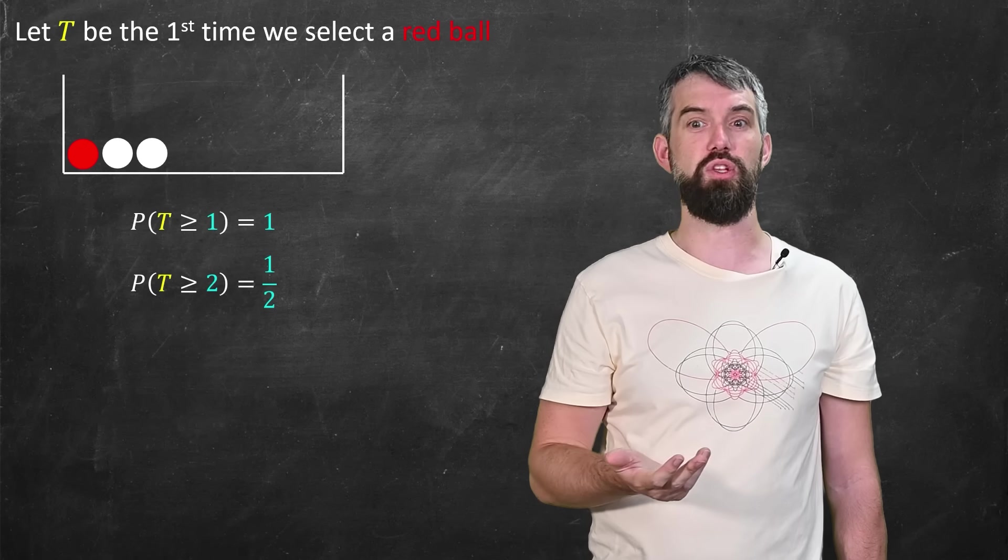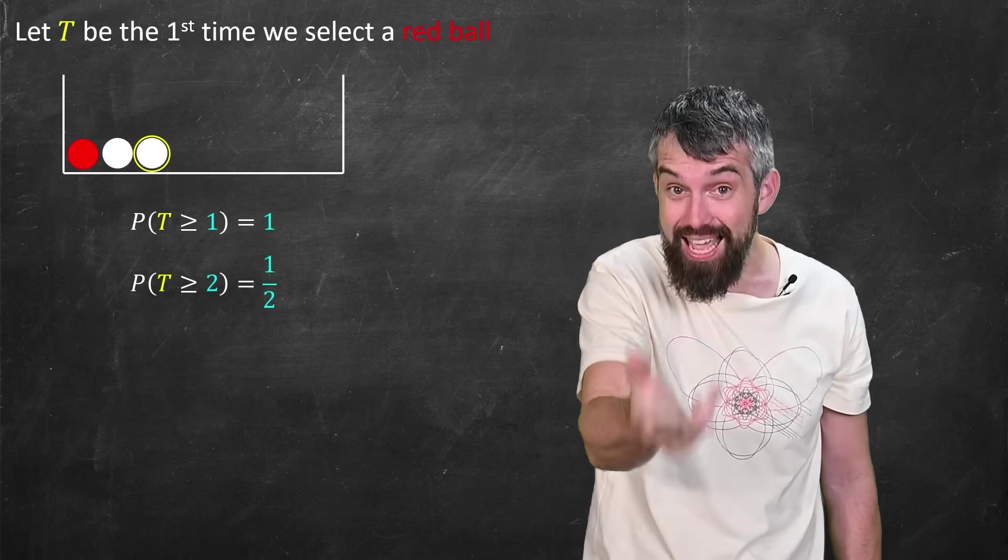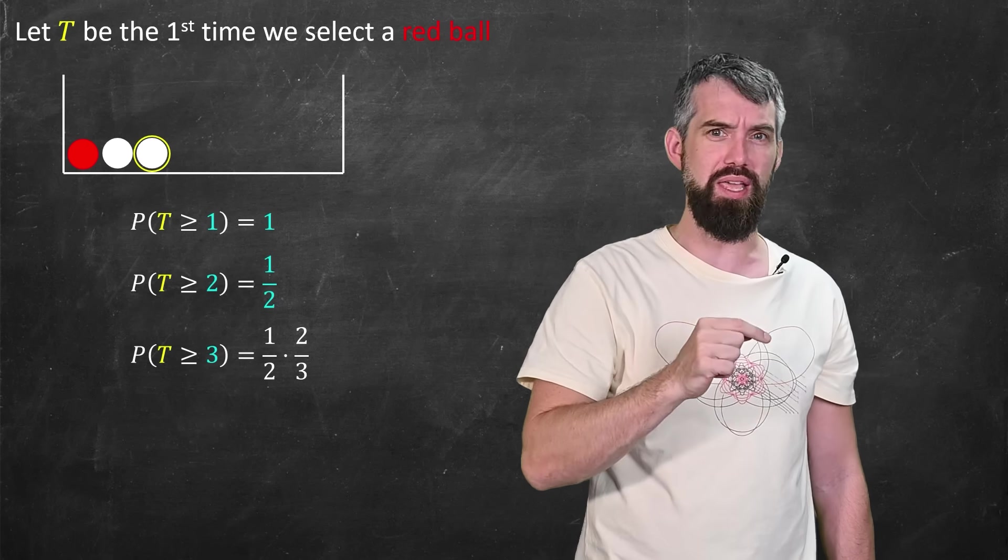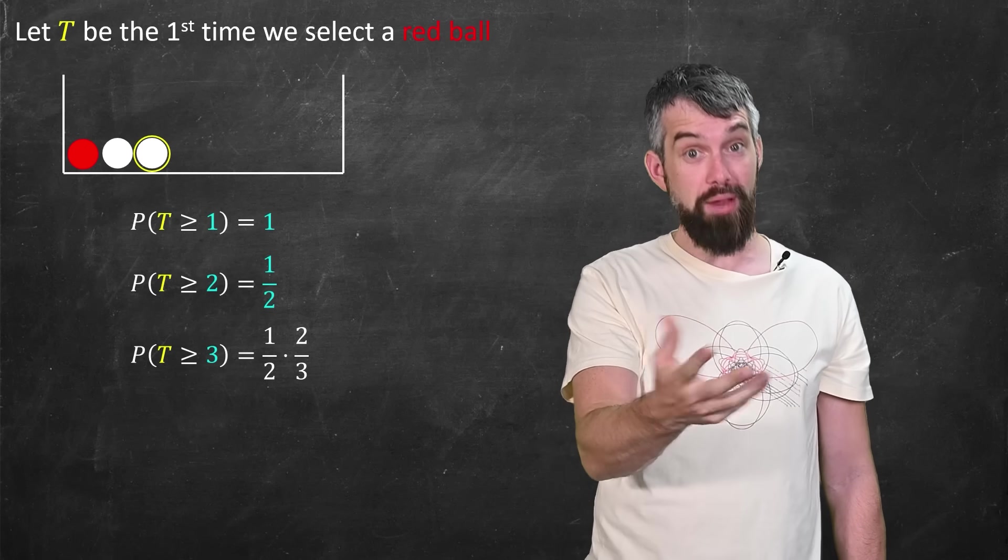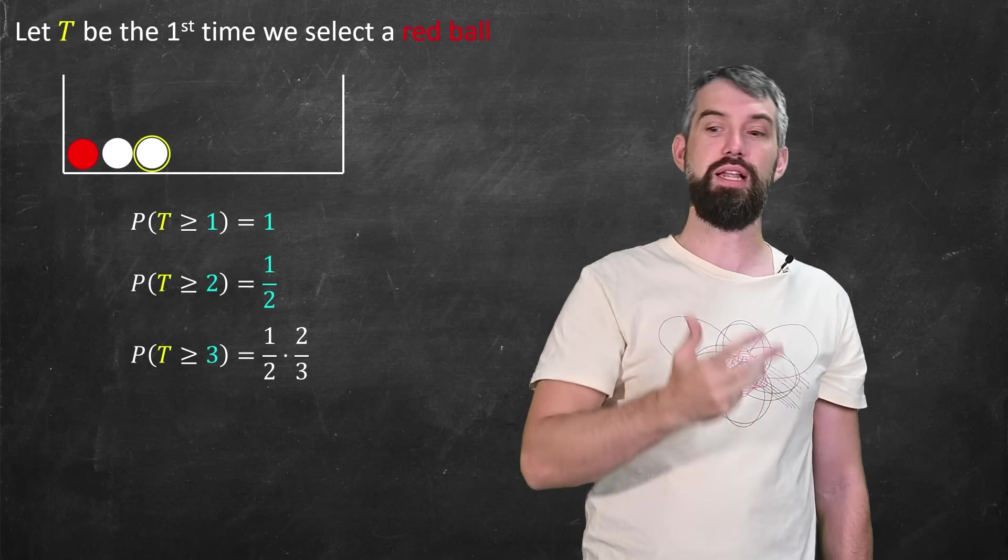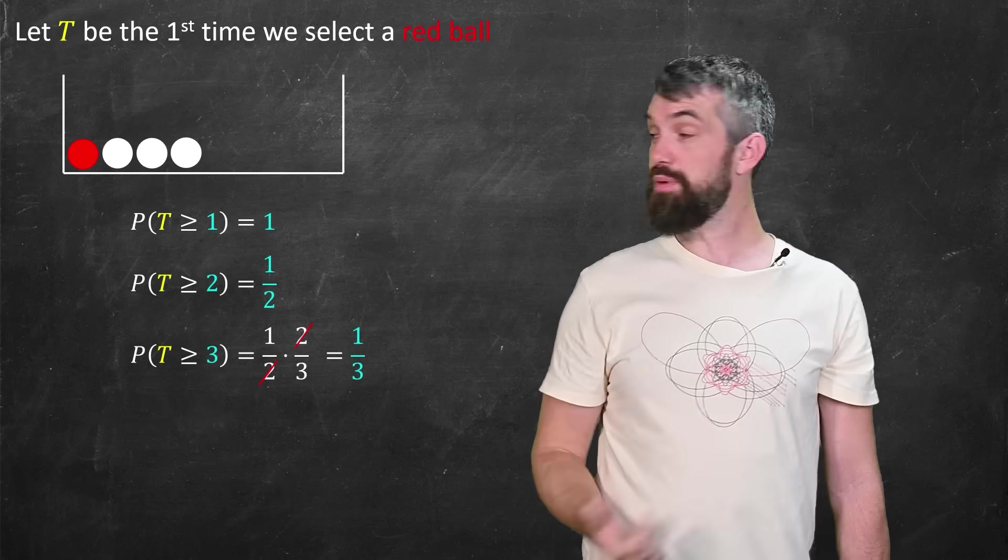And then we can keep on going. So then we would select another ball. And if that one was again white, the probability that it would take at least three steps now would be the previous probability of one half times two thirds. The twos cancel, and you get this lovely value that this is just equal to one third.